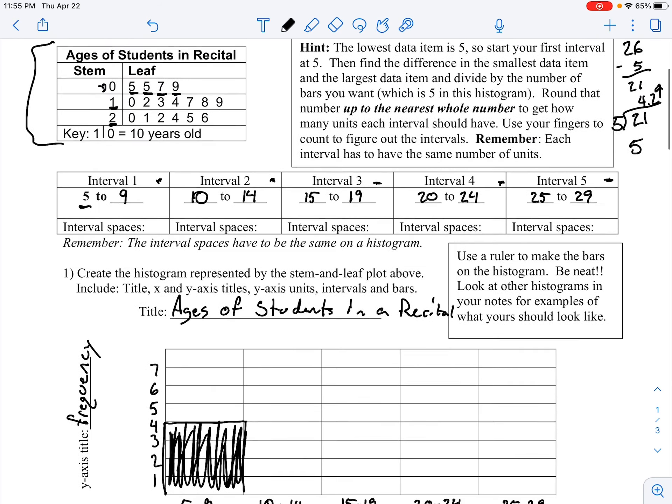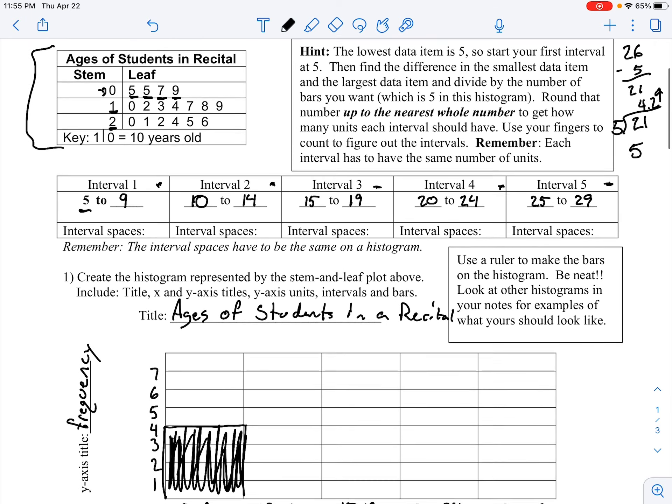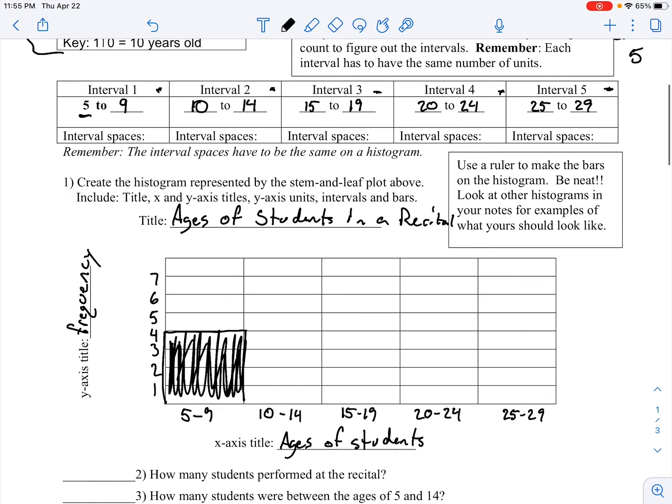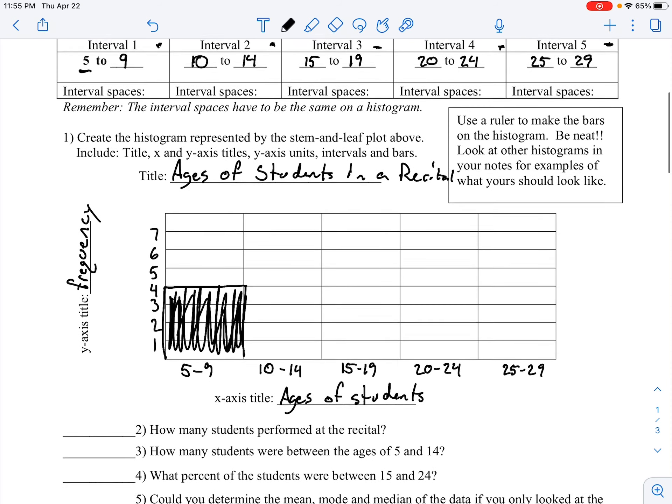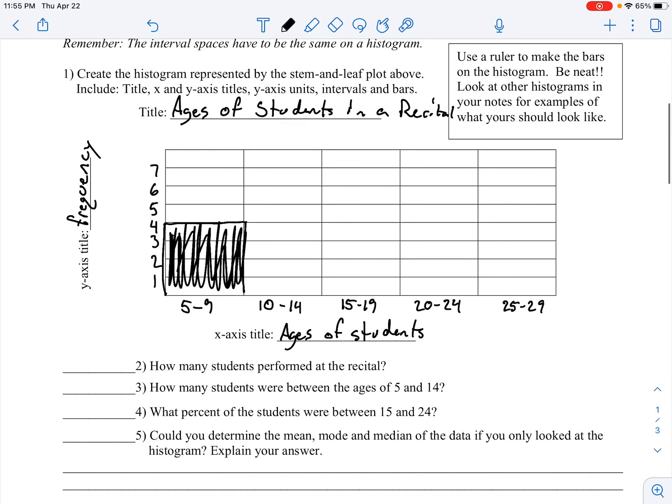Now what I want you to do is keep using the information from this stem-and-leaf plot to continue to create your histogram. Once you finish that, I want you to answer these remaining questions about the histogram. Go ahead and pause while you do that, then when you hit play again, we'll move on to the next chart.